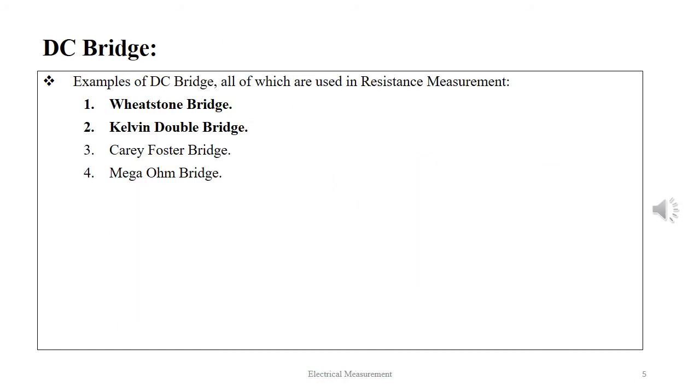The four principal examples of DC bridges are Wheatstone bridge, Kelvin double bridge, Carey Foster bridge, and megaohm bridge. All these four bridges are used to measure resistance values of varying range.